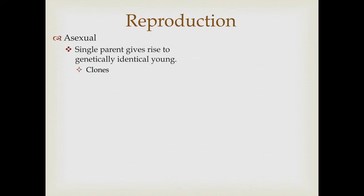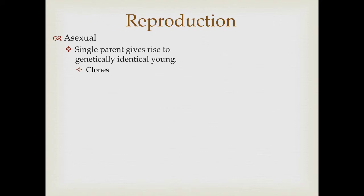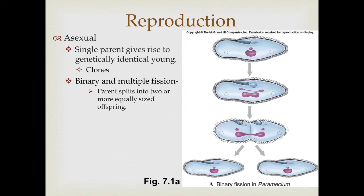The first type of reproduction we're going to talk about is asexual reproduction, where a single parent gives rise to genetically identical young. This is the original cloning. In asexual reproduction, the parents produce offspring that are genetically identical to themselves. There are many ways that different organisms can do this.